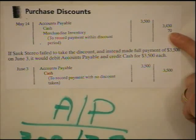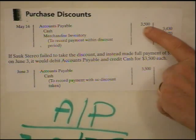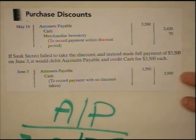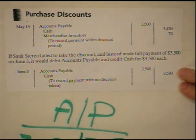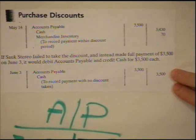If we did not take the discount, we would still remove the whole $3,500 from accounts payable, but we would pay cash of $3,500 — no credit to merchandise inventory. That entry would reflect a June 3rd payment, made outside the discount period. That's how we record entries for the person making the purchases.